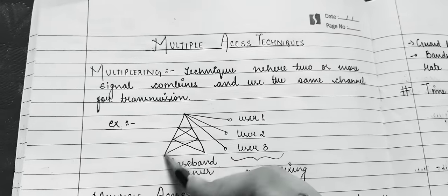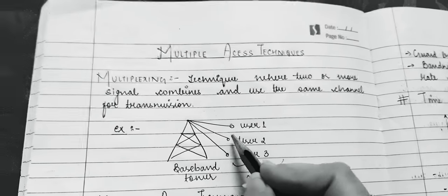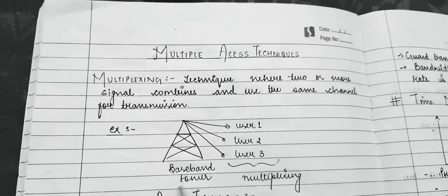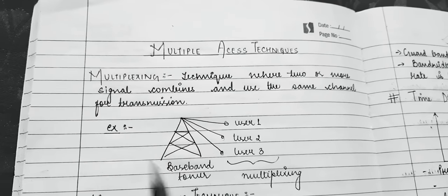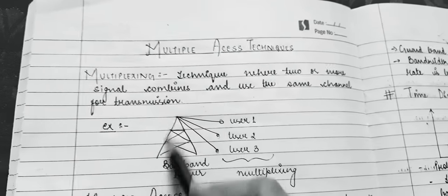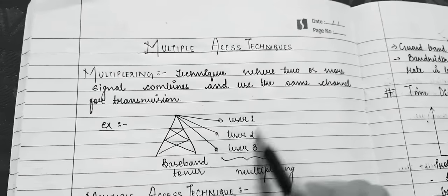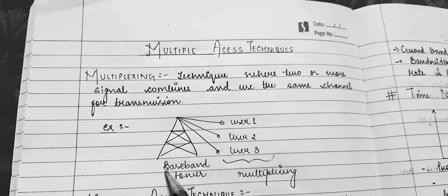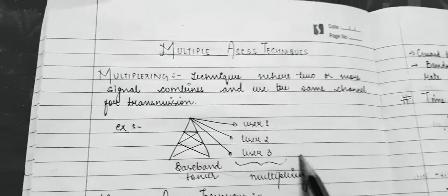For example, if you have a baseband transmitter, here it is representing user 1, user 2, and user 3. This is an example of multiplexing — we have a baseband transmitter with three users connected to it, using the same channel medium, and that is known as multiplexing.